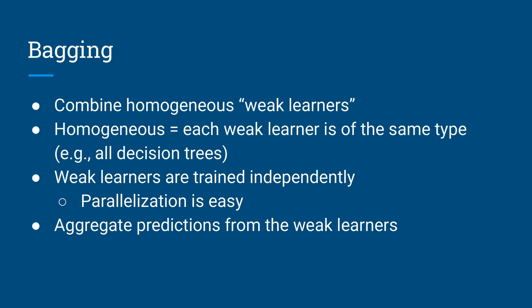With bagging, we train each of the weak learners independently, which means we can parallelize the model training across multiple cores or computers very easily. To obtain predictions on unseen data, we then aggregate the predictions from each of the weak learners and perform some type of averaging.